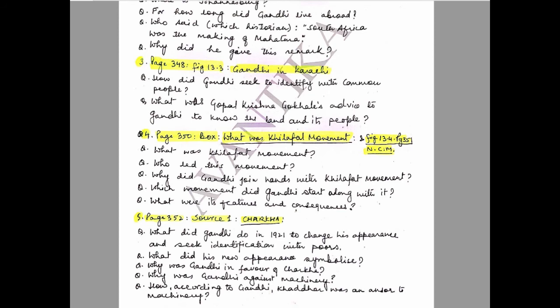Question 5: Page 352, Source 1 — Charkha. Questions: What did Gandhi do in 1921 to change his appearance and seek identification with the poor? What did his new appearance symbolize? Why was Gandhi in favor of the Charkha? Why was Gandhi against machinery? How, according to Gandhi, was Khaddar an answer to machinery?